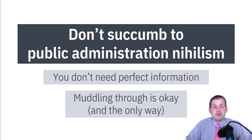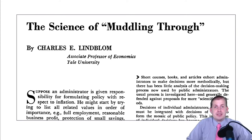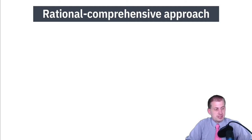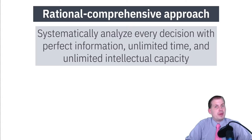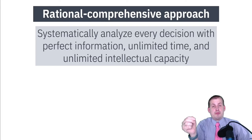What you really need to do is muddle through — that's why I had you read Charles Lindblom's article 'The Science of Muddling Through.' He argues that it is perfectly okay to just kind of guess your way through making policy as well as you can, because that's the only way you can actually make decisions. What he criticizes is the idea called the rational comprehensive approach to management and policy.